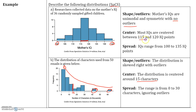For the spread, we're not going to count the outliers. When you have a skew — either skewed right or skewed left — we don't count the outliers. So the spread, ignoring the outliers, ranges from 0 to 30 characters. So when you describe a distribution, always use SOCS: shape and outliers, center, and spread.